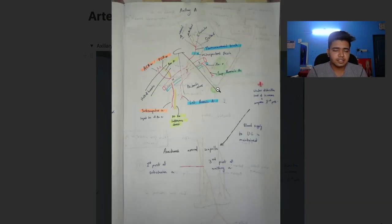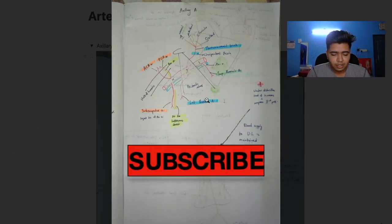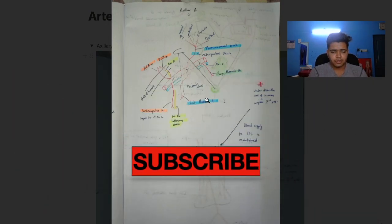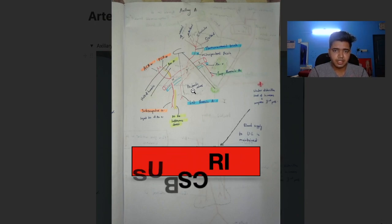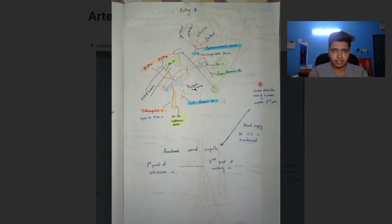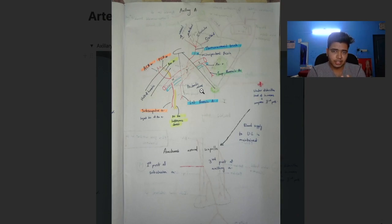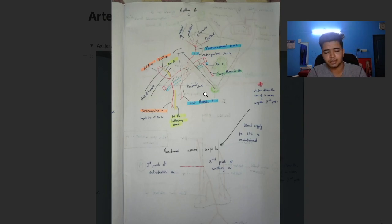The axillary artery is divided into three parts. The pectoralis minor overlaps the axillary artery and divides it into three parts: the proximal first part, the part which is below the muscle is the second part, and the part which is distal is the third part.